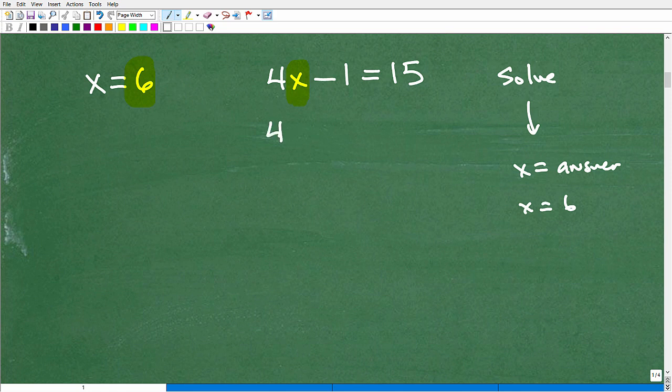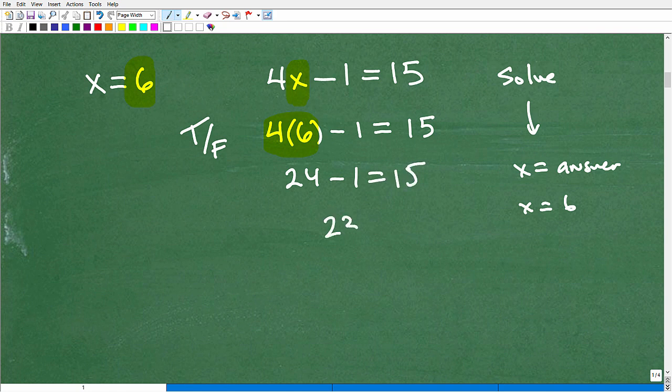So, what I'm going to do is I'm going to take this 4, and I'm going to put parentheses. I'm going to put the 6 in here like this, minus 1. And now I've got to see, I've got to determine, is this true or false? Well, let's go ahead and do the math. 4 times 6 is 24 minus 1. I get, is that equal to 15? Well, is 23 equal to 15? No, it's not. It is not equal to 15.